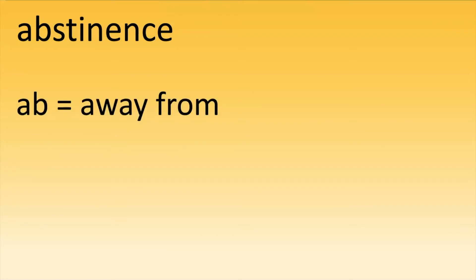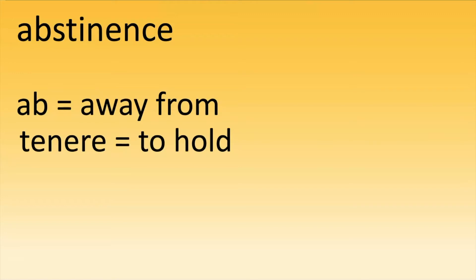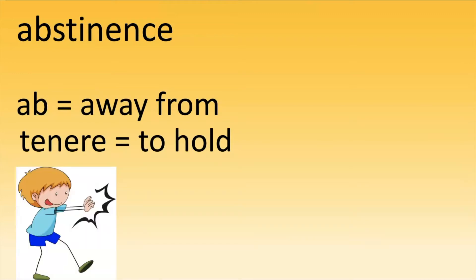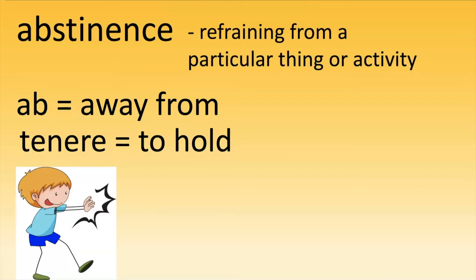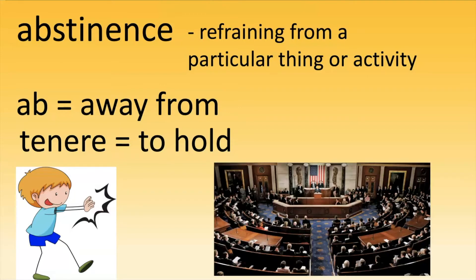Next we have 'abstinence,' which is actually a similar word. AB is our prefix, and 'tenere' means to hold. So you're holding something away from you, similar to pushing it away. This is refraining from a particular thing or activity. You can abstain from food or drink, and you can also hear this in the political realm if a congressperson abstains from voting. So abstinence is just refraining from a particular thing or activity.